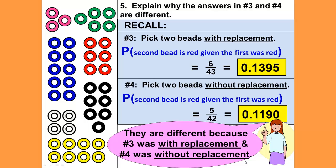Why are they different? Well, they are different because question number three was with replacement and question number four was without replacement. Question number three with replacement, the sample space remained the same, and question number four, we changed the sample space.